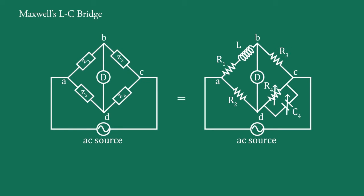Here we assume that the condenser is without losses and all resistances are perfectly non-reactive. Now if we compare these two bridges, we find that Z1 equals R1 plus jωL, Z2 equals R2, Z3 equals R3, and corresponding to Z4 there is a parallel combination of R4 and C4.